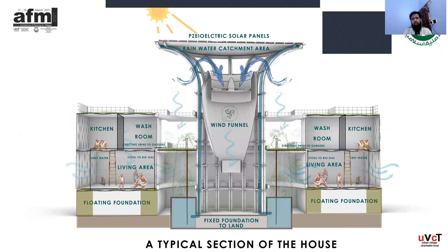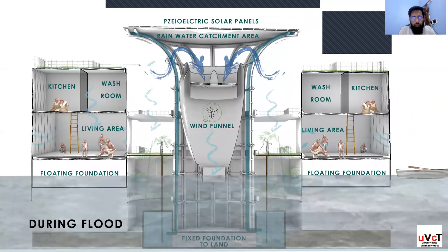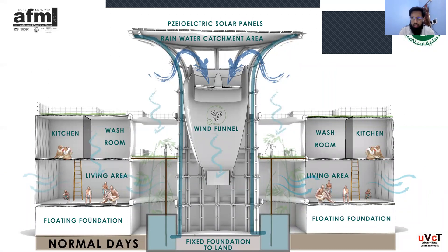In the schematic section, the lower level has the living area and the upper level has the kitchen and washrooms. Urine from the washrooms is directed to the gardens, and solid waste is collected below in the foundation. Gray water is also collected within the foundation tank. Rainwater catchment is above the spine — the surface collects water, which is stored in two tanks on either side and then pumped out for use. During floods, the entire house rises, and returns to normal level as water recedes.